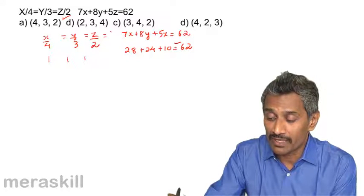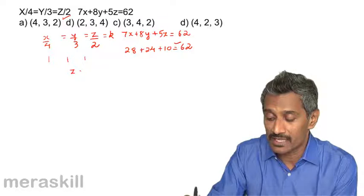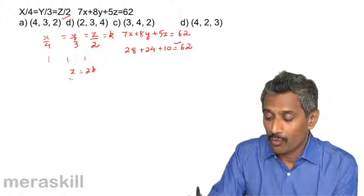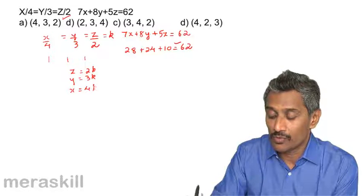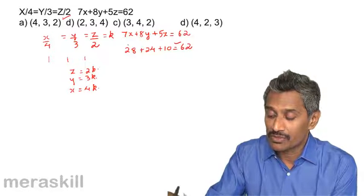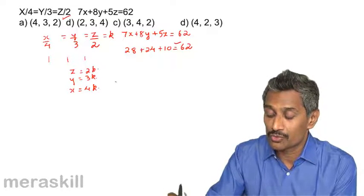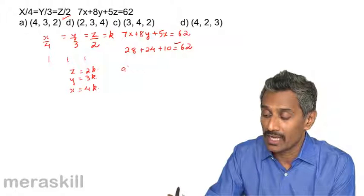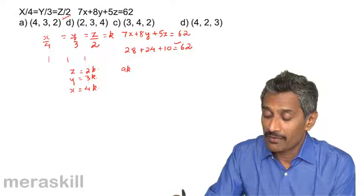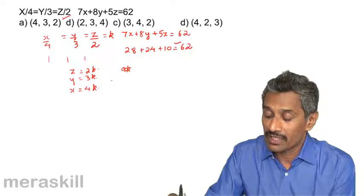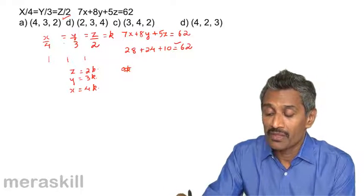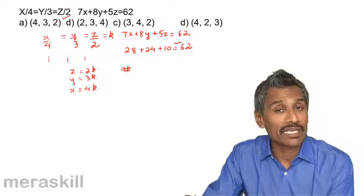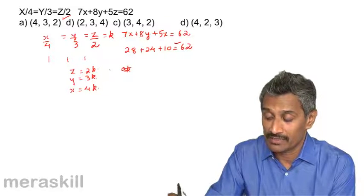The other way, as I mentioned, you can make each ratio equal to k. You get z = 2k, y = 3k, and x = 4k. These three values can be substituted into the equation to get a value for k. Once you get the value of k, you substitute back to get the values of x, y, and z.